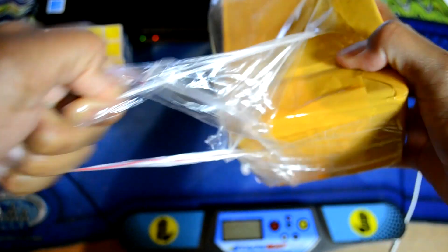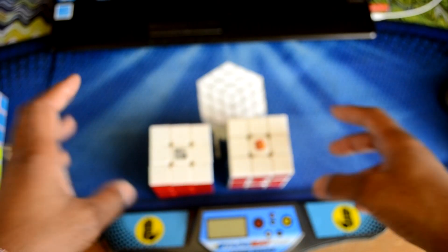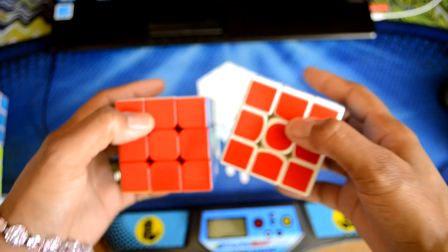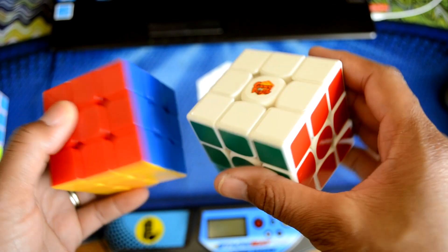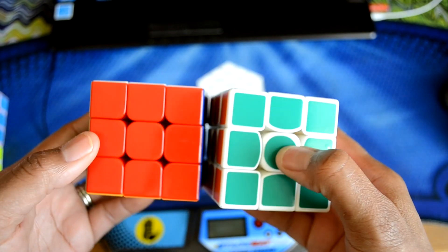So here's the package and I'm just going to keep opening it. In here should be two cubes. Here are the cubes, the YJ Yulong and the Gans III 57mm.